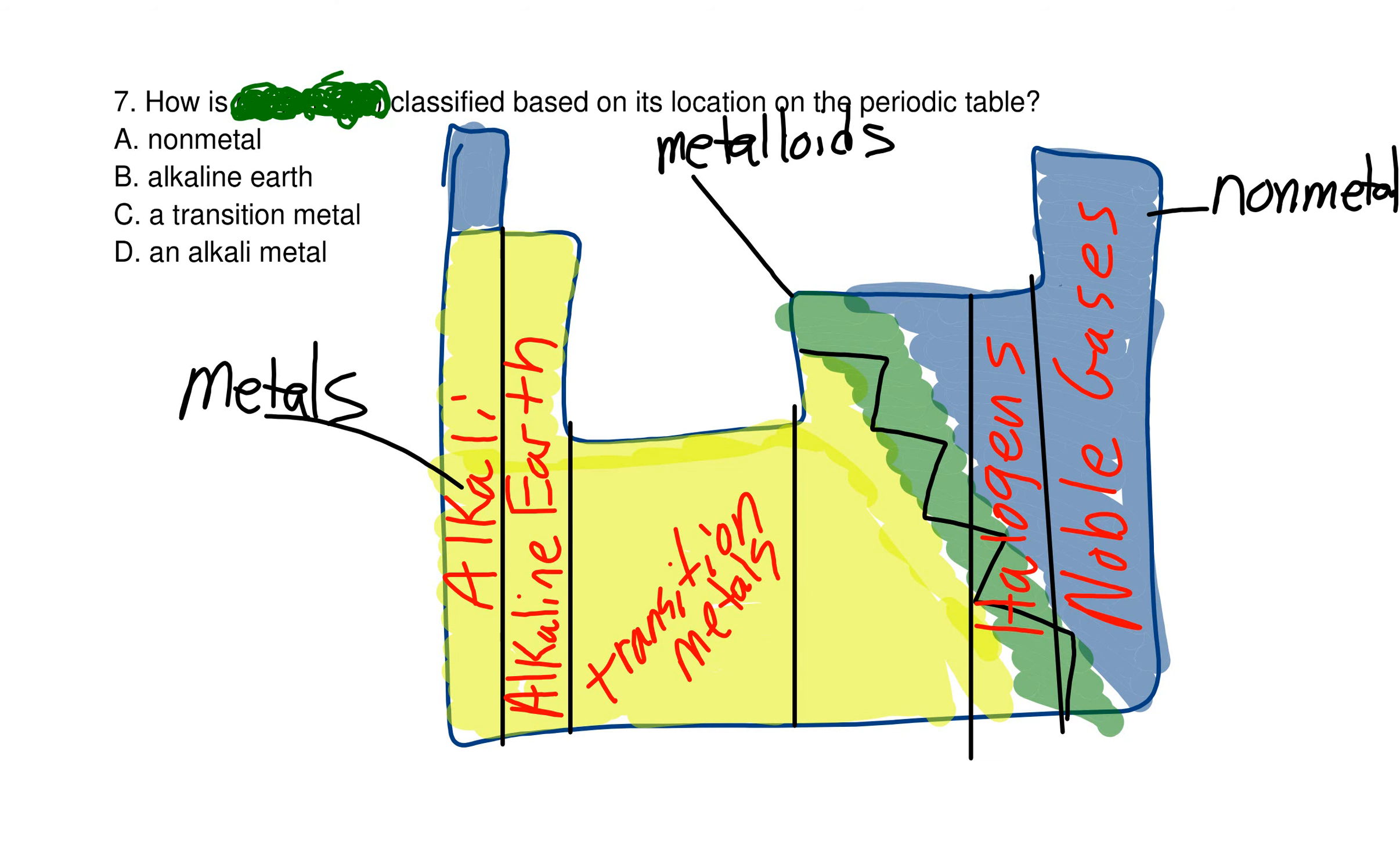And remember, group 1 are the alkaline metals. Group 2 are the alkaline earth metals. 3 through 12 are the transition metals. Group 17 is the halogens. Group 18 are the noble gases. On the left, we have the metals in yellow. On the right, we have the non-metals in blue. And in green, in the middle, on the stair step, we have the metalloids.